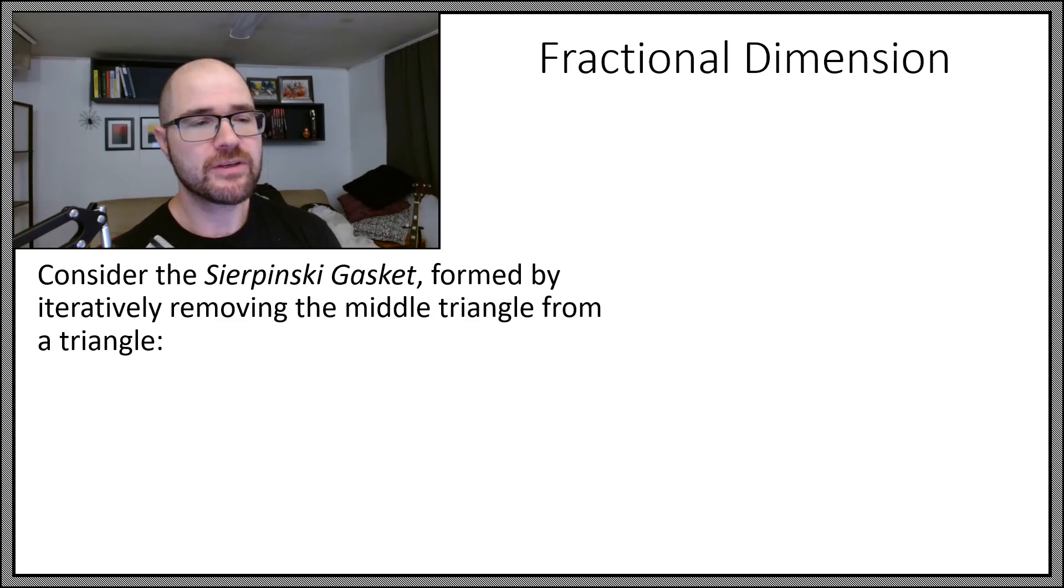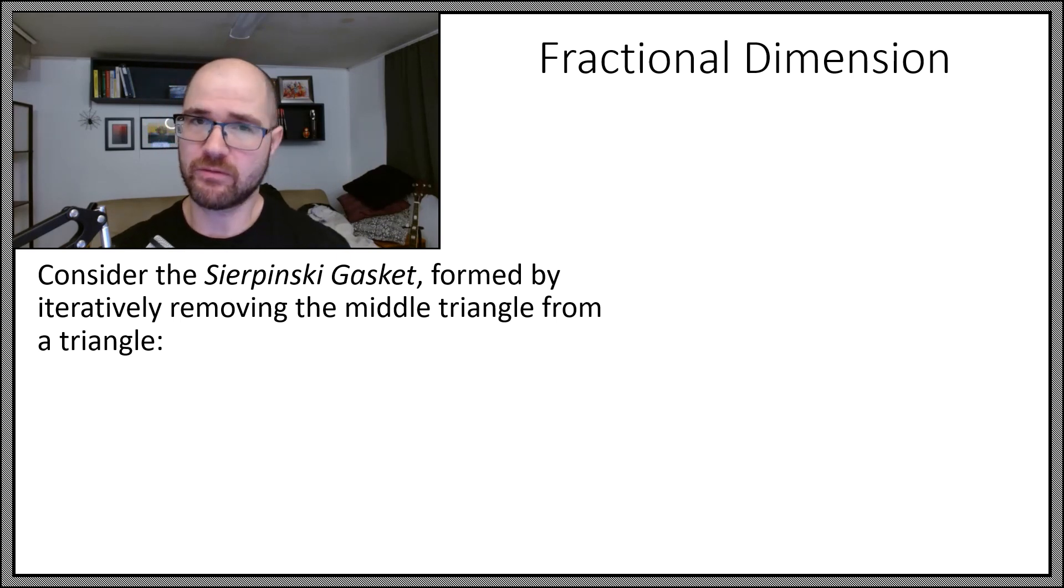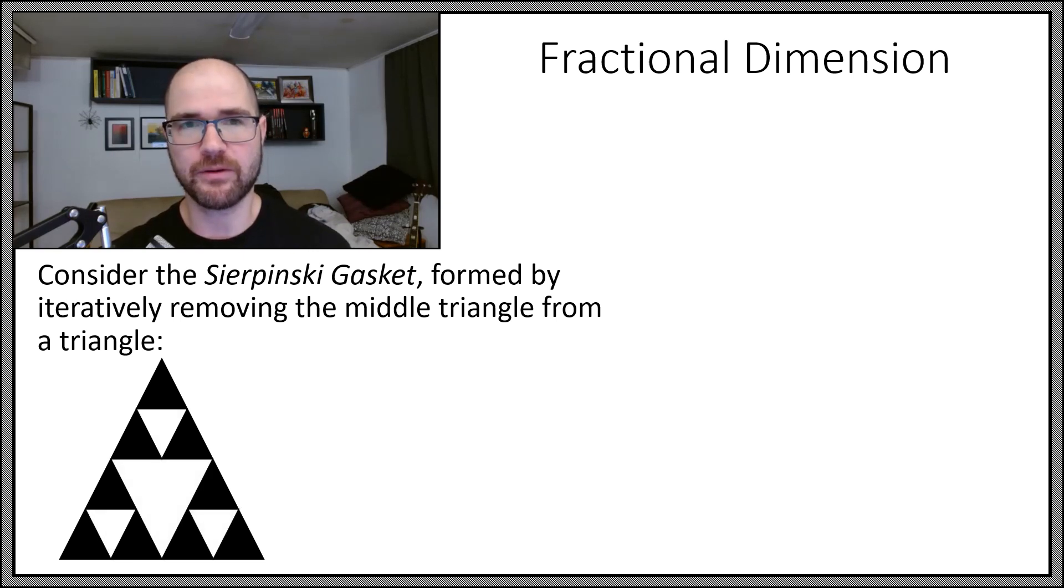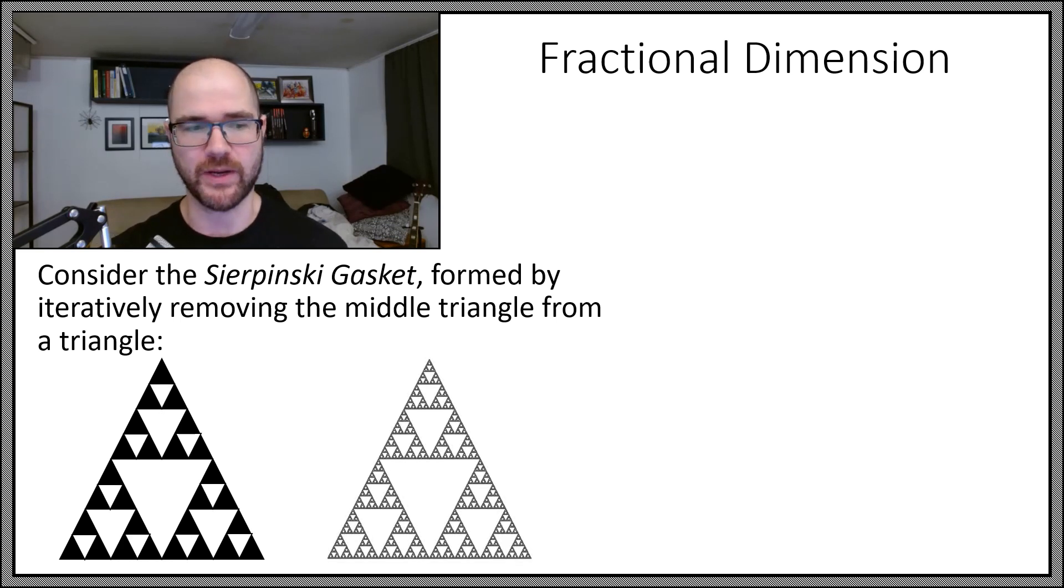So consider this Sierpinski gasket formed by removing the middle triangle from a starting triangle. So here is a triangle. I remove the middle triangle, and what I now have are three triangles. If I remove their middles, I now have nine triangles. And I can remove their middles, and I can keep going. And if you just keep going and going and going and take a limit as the number of iterations goes to infinity, you get a shape kind of like this.